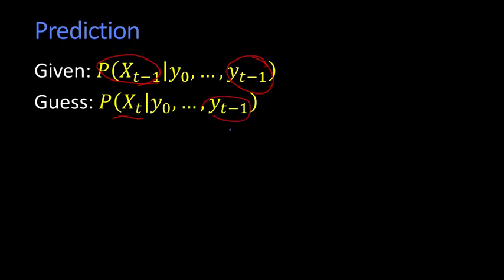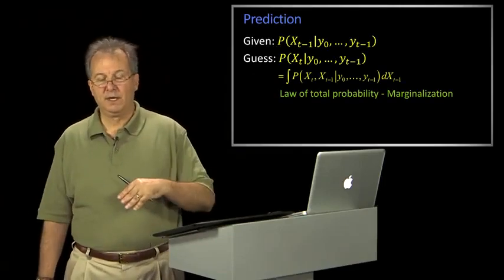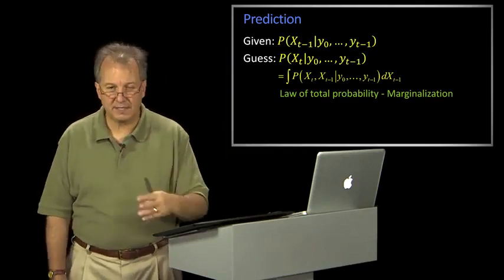Still given only the measurements through time t minus 1, the way we do that, and it's going to be written out here in sort of a standard way, and then we're going to make specific use of that, especially in particle filtering, which we'll do in a little bit. The way you would do that is what's known as, you use the law of total probability and marginalization, right?